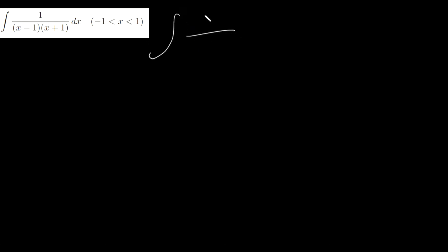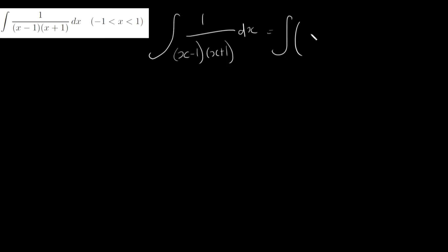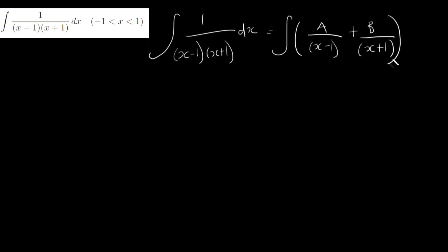So let's see how we do that. We recognize that the integral of 1 over (x minus 1)(x plus 1) dx is the same as the integral of A over (x minus 1) plus B over (x plus 1) dx. We're just undoing the common denominator and breaking it into partial fractions with constants A and B. This form is going to be much more integrable than the original.